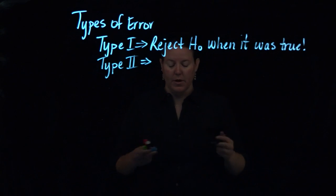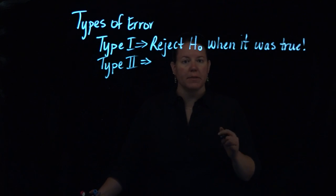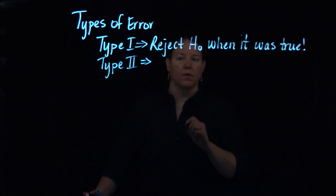Well what is Type 2 error then? Type 2 error must be the opposite, which is failing to reject the null when it was false.